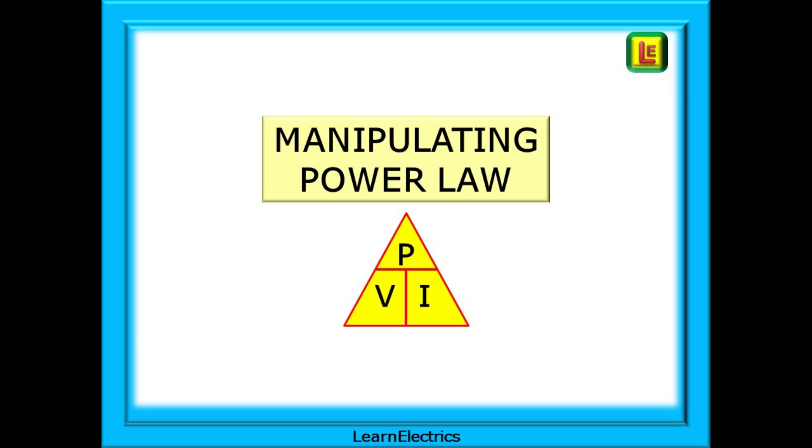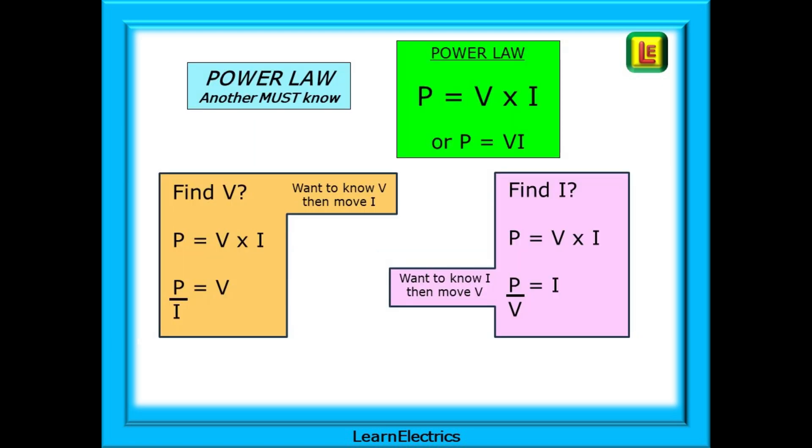Exactly the same method can be applied when manipulating power law. You will use this formula more times than you can count during your career as an electrician. When we install equipment, it usually comes with a rating plate marked in watts or kilowatts. But the rating plate doesn't tell us the size of fuse or breaker that we need. We need to use the power law formula to calculate the amps that the device will take. Power law is another must-know formula. P equals V times I. Power is equal to the voltage multiplied by the current.